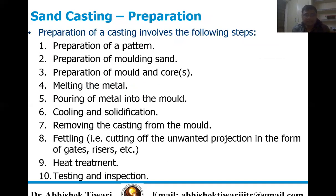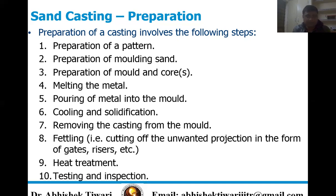Now what are the steps involved in metal casting? First is preparation of a pattern; second is preparation of molding sand; third is preparation of mold and cores; fourth is melting the metal; fifth is pouring of metal into mold; sixth is cooling and solidification; seventh is removing the casting from mold; eighth is fettling — cutting of unwanted projections in the form of gates, risers, etc.; ninth is heat treatment; tenth is testing and inspection of any defects in the metal casting.